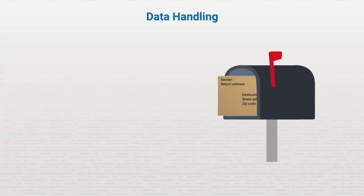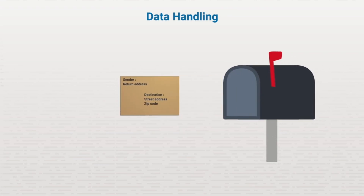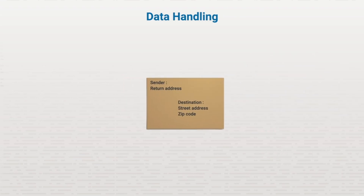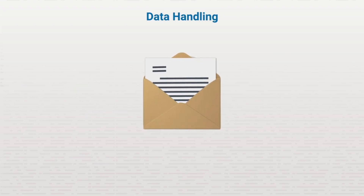Think of a time that you got a letter in the mail. The letter was inside an envelope. The envelope showed the address of the person that sent you the letter. It also showed your street address and your zip code. Data traveling over your network is like the letter in the envelope. The street address is like the MAC address and the zip code is like the IP address, while the letter itself is the data.